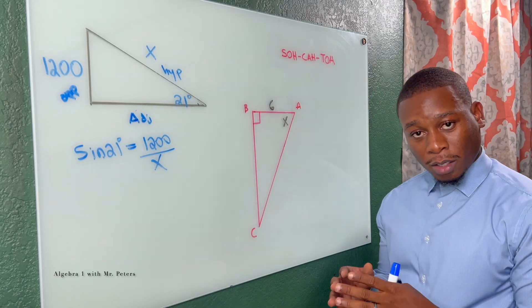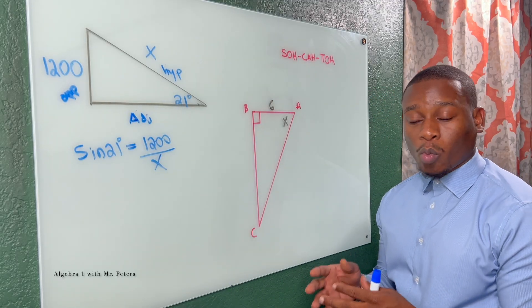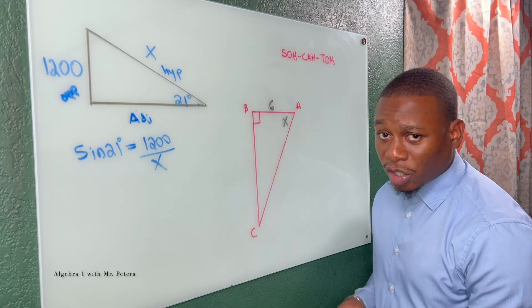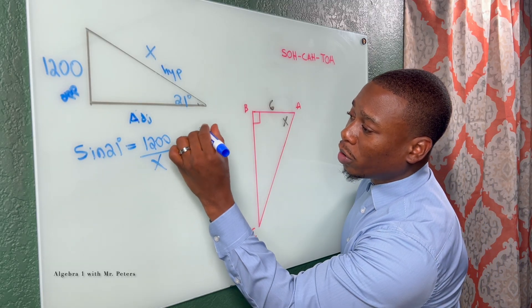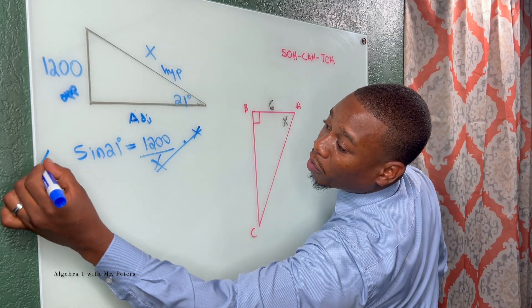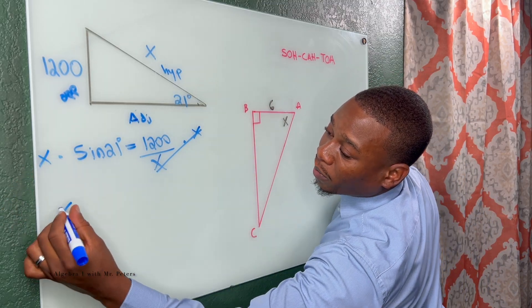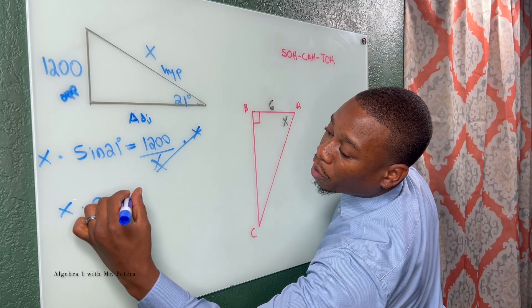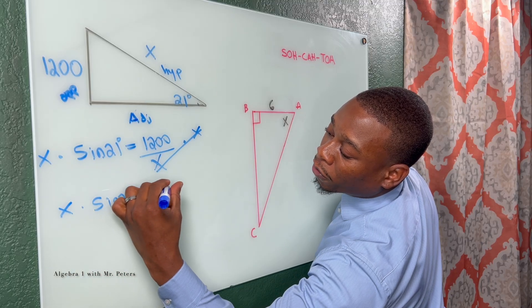Now first to get or figure out what X is, we're going to have to manipulate this equation and rearrange it. So this is why you see me multiplying by X so we can get it by itself and do the same thing here. So now I'm saying X times sine 21 is equal to 1200.